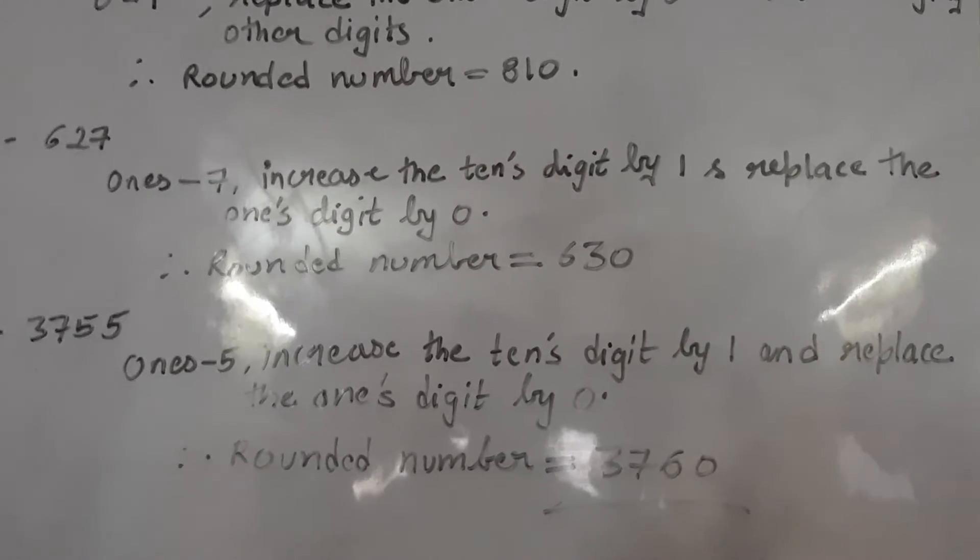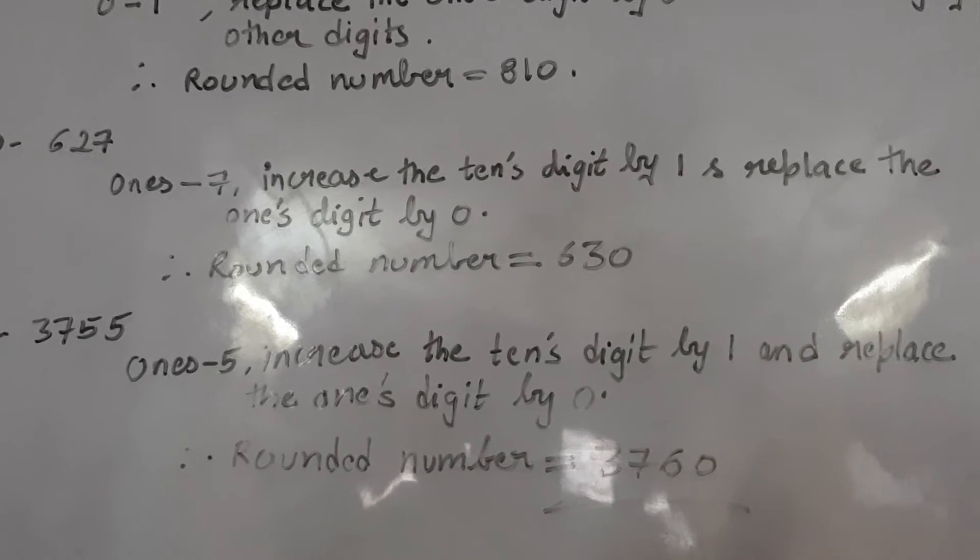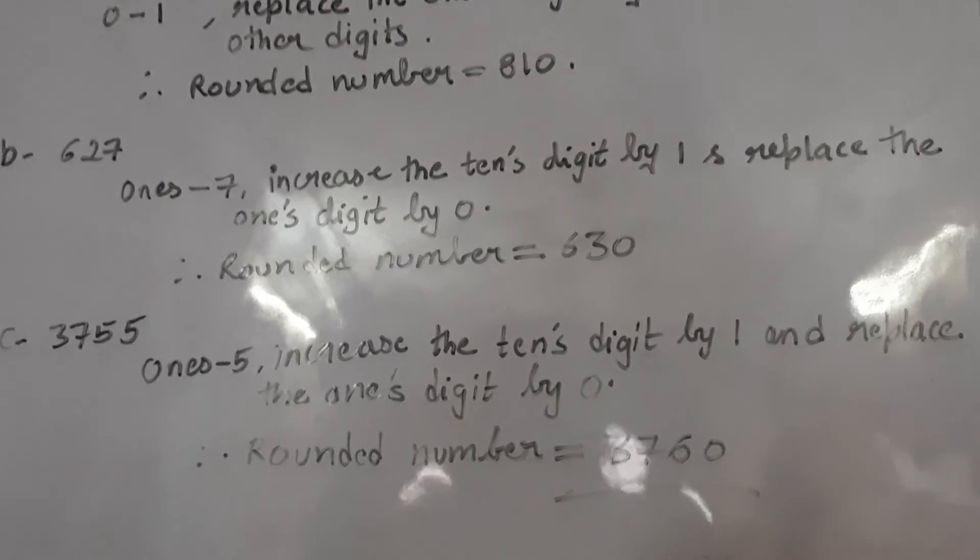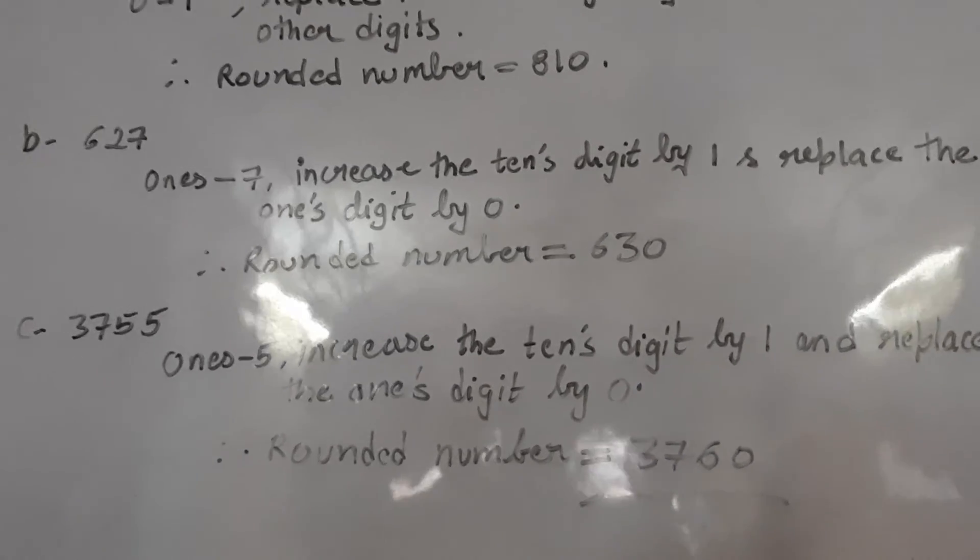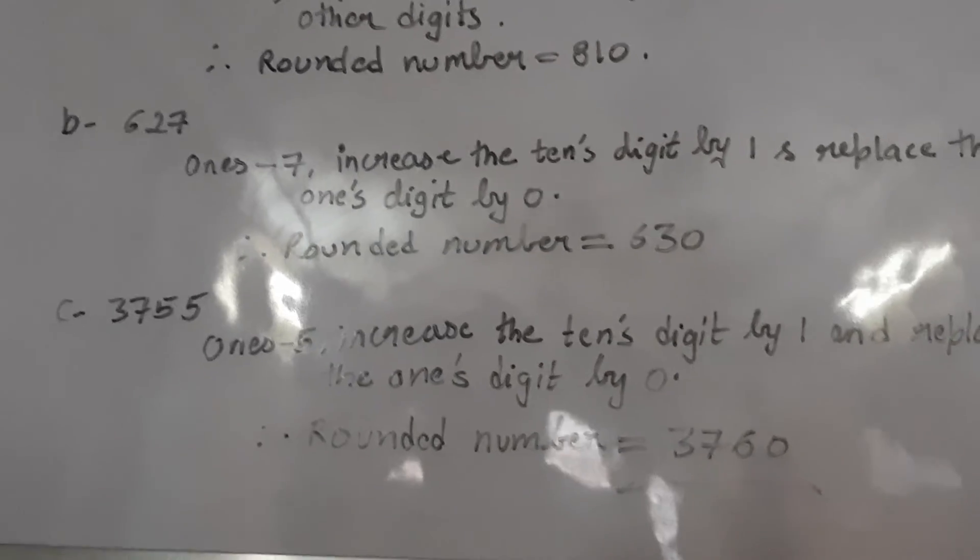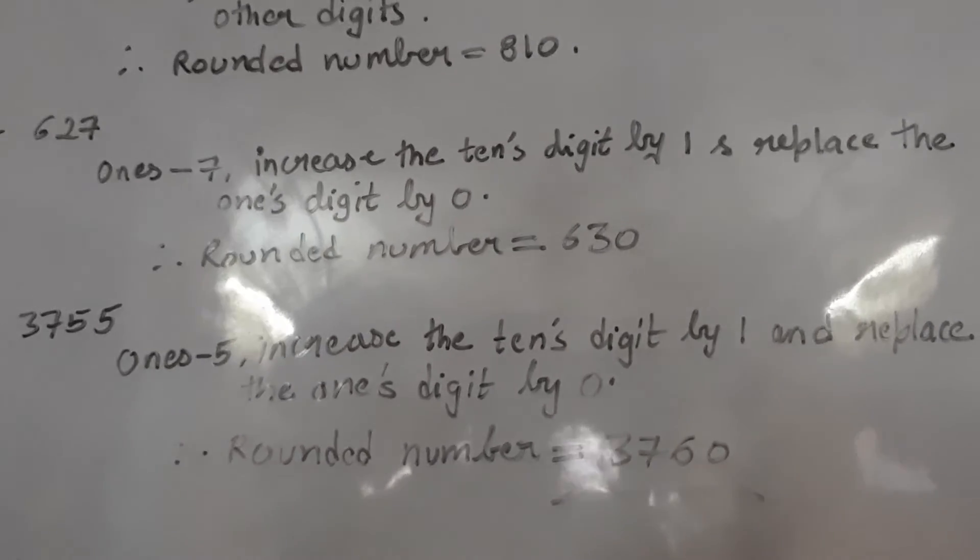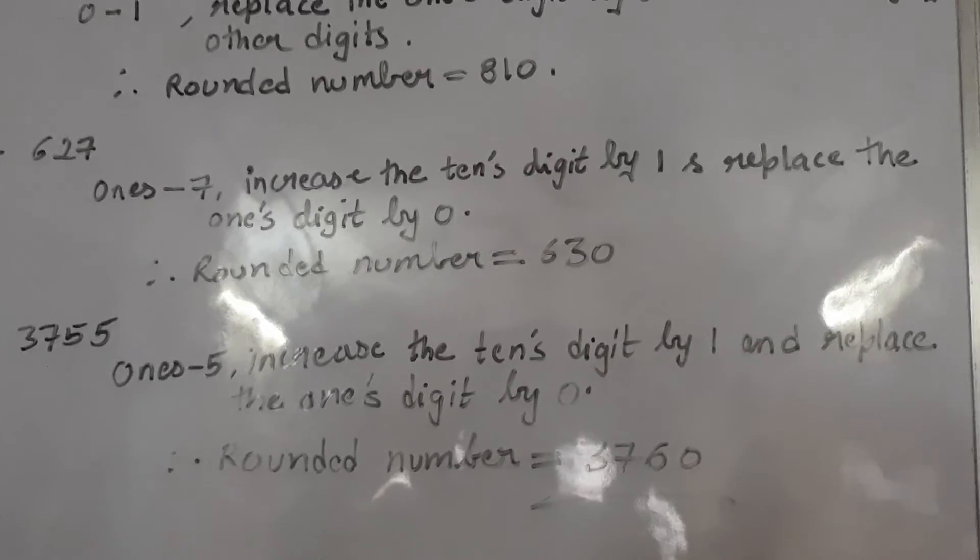Like 3, 7, 6, 0. How it comes? You will add 1 at 10's place. What is there at 10's place? 5 is there. So 5 plus 1 comes out 6. And at 1's place you will directly note down the 0. So answer comes out 3, 7, 6, 0.